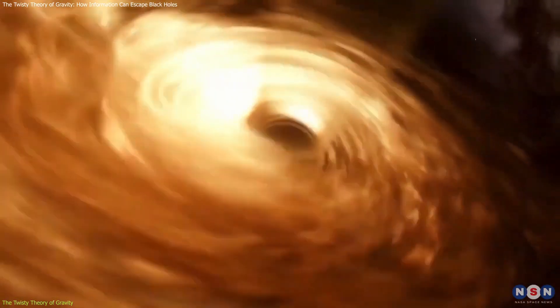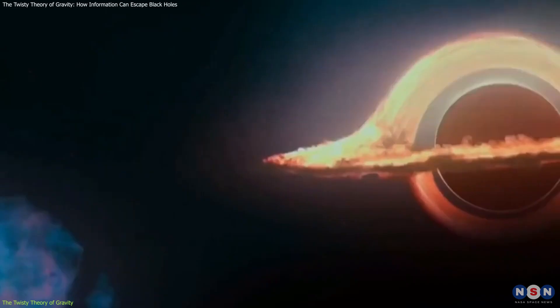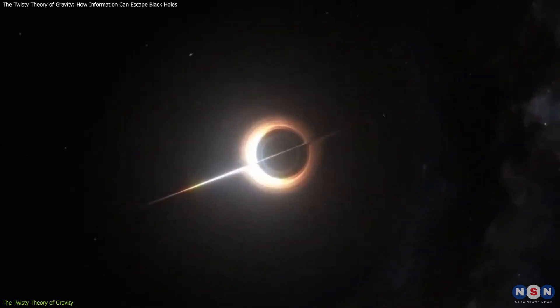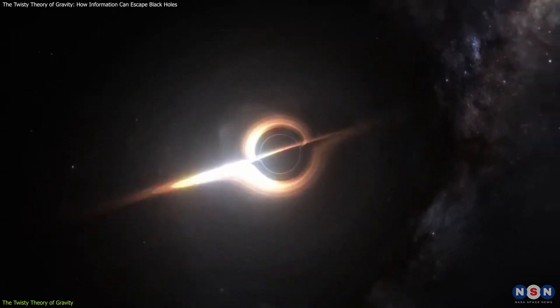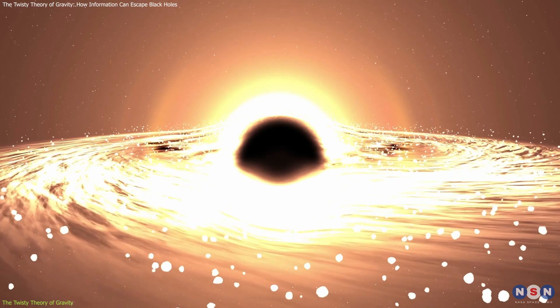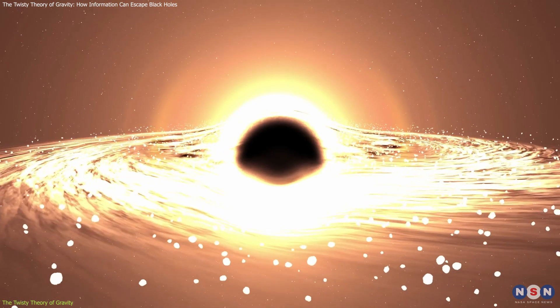However, this new theory has some striking implications for black hole physics. First, it implies that black holes have more properties than just mass, charge, and spin. They also have quantum hairs, which are additional features that encode information on their surfaces using twisters.